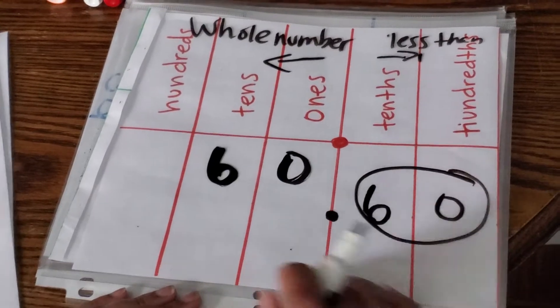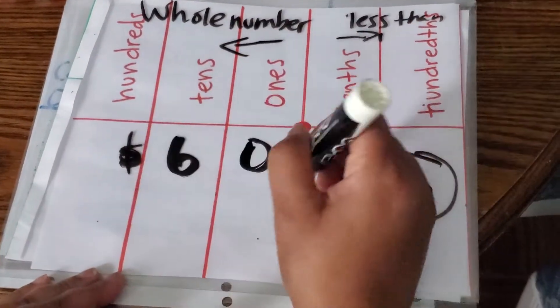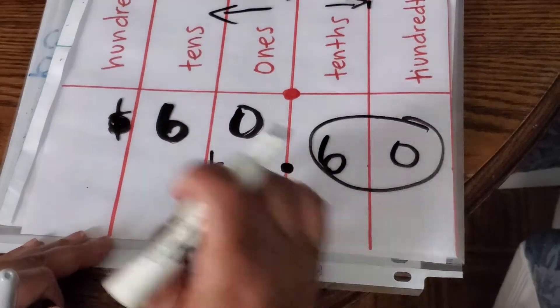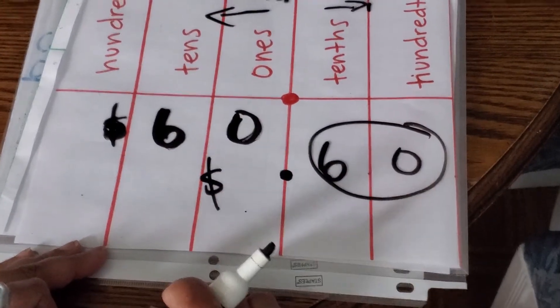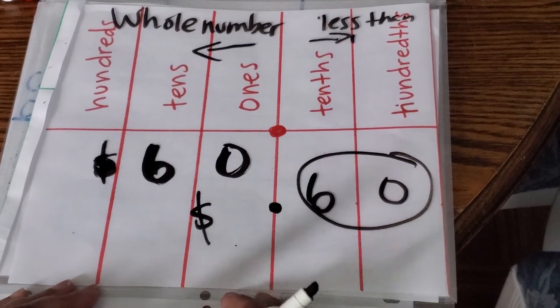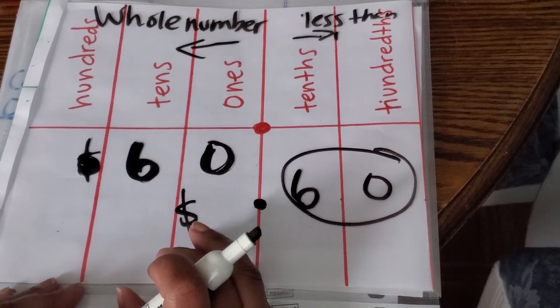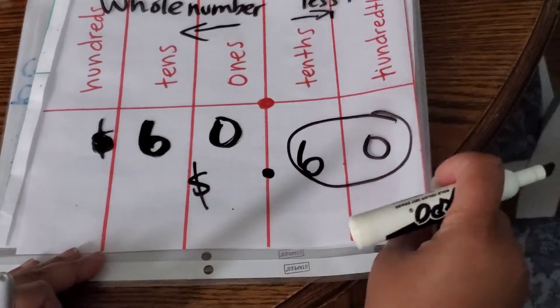Either way, these two numbers are not the same. If you're talking about money, if each of these was dollar values, this would be $60. This would be 60 cents. That makes a big difference. You go to the store and you pay them 60 cents for a $60 item, they're going to put you out. You have to know the difference between the two.